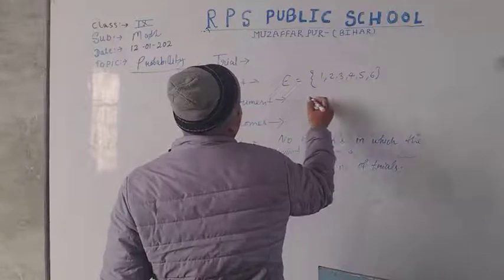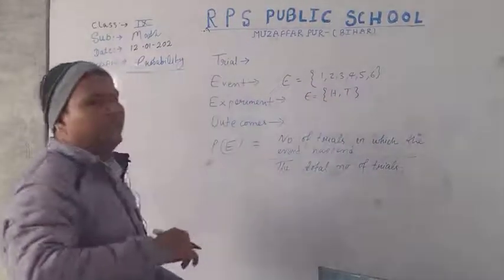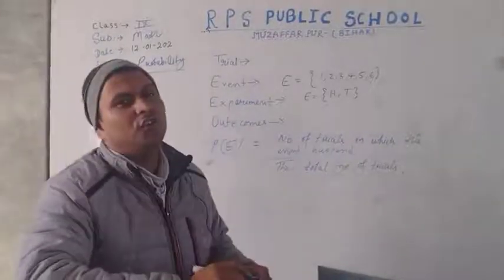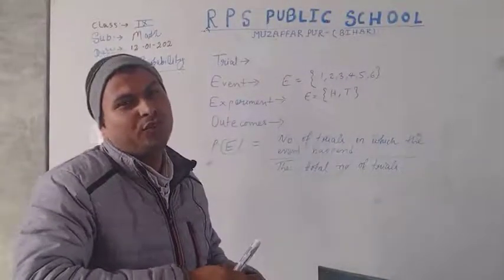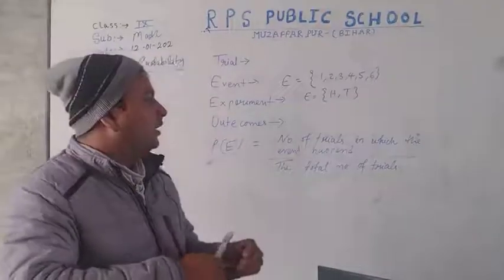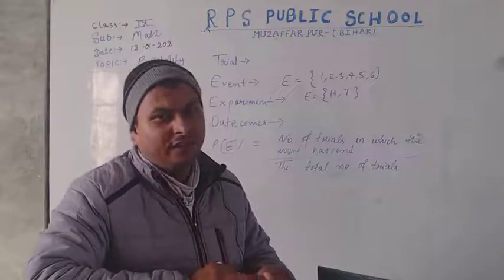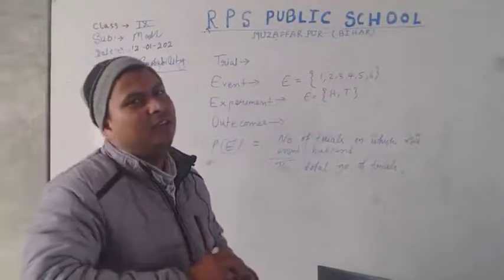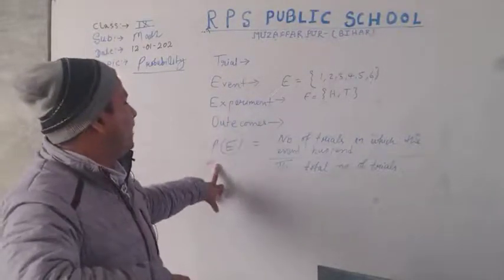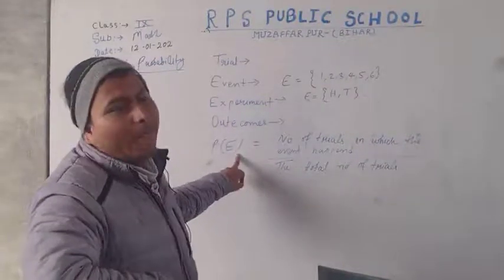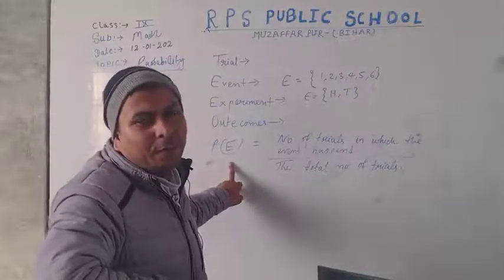For tossing a coin, we write Y = {head, tail}. These are the terms used in our syllabus. Now, what we have to do in this topic is find the certainty of any event or situation given in the question. For this, we use this formula: empirical probability, also called experimental probability.